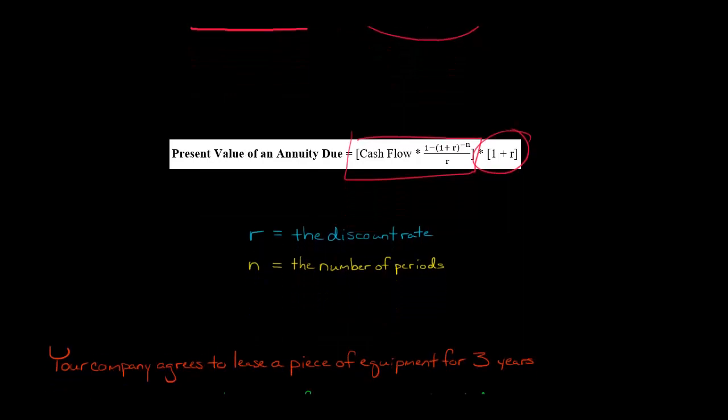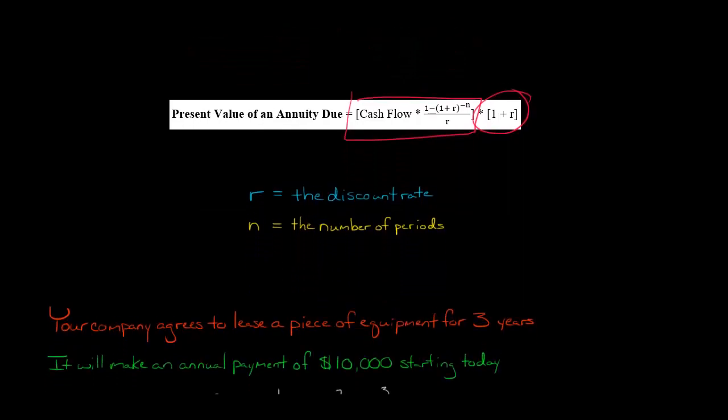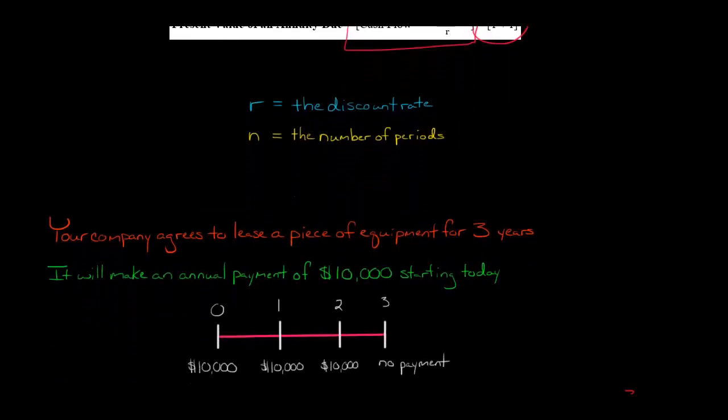Let me show you an example. Your company agrees to lease a piece of equipment for three years and will make an annual payment of $10,000. Here's the key that makes it an annuity due: the first payment begins today.